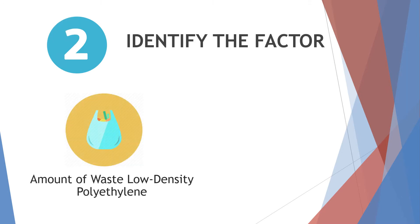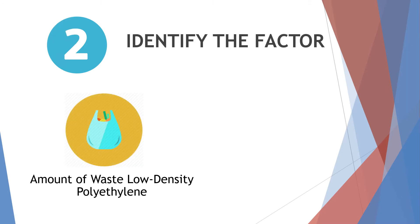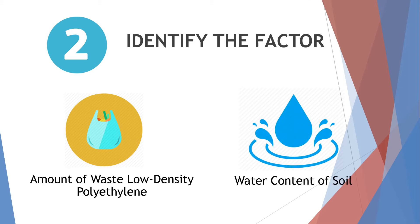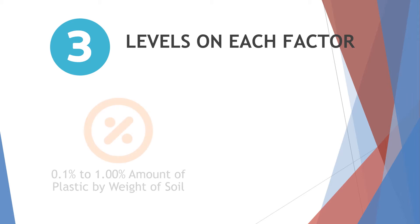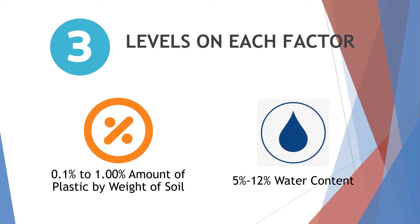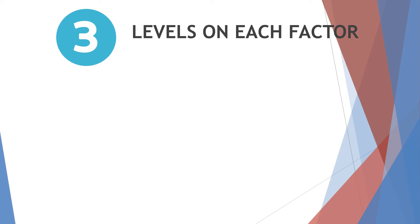Second, we identify the factors which may affect the CBR. In this case, we consider two factors: the amount of waste low density polyethylene and the water content of the soil. Third, we set levels on each factor. For the first factor, we consider levels from 0.1 to 1% amount of plastic by weight of soil. For water content, we consider levels from 2 to 12%.